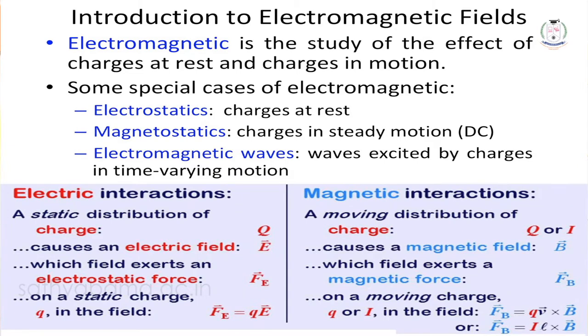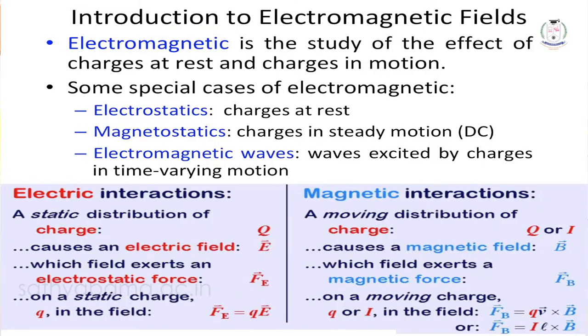When coming to electric field, the charge will be at rest position. When you consider two charges Q1 and Q2 at rest, there will be a force existing between them according to Coulomb's law. When moving to magnetic field, the charge will be under moving condition, and the Lorentz force will come into play.